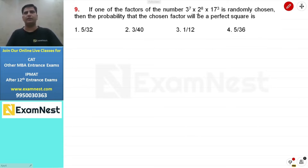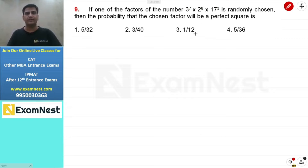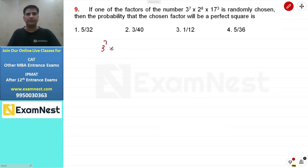If one of the factors of the number is randomly chosen, we need to know the total number of factors. The number is 3 raised to the power 7, multiplied by 2 raised to the power 8, multiplied by 17 raised to the power 3.